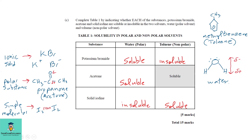Acetone (propanone) is polar because of the carbonyl group — the oxygen is highly electronegative, pulling electrons towards itself, making O partially negative and C partially positive. Water, being polar, dissolves polar substances, so acetone is soluble in water. Acetone is also soluble in toluene due to the non-polar methyl groups in the molecule.